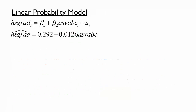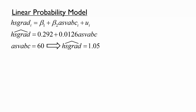Let's use the same model to predict the probability that an individual with an ASVAB score of 60 has a high school diploma. A score of 60 is relatively high — almost the 90th percentile of this sample. Plugging in ASVAB C equals 60, we predict HSgrad to be 1.05. If we apply the same interpretation literally, an individual with an ASVAB score of 60 has a 1.05 probability of having a high school diploma. Of course, probabilities cannot be greater than 1 — so how do we get this value? Simply put, a linear model does not guarantee that the predicted values are between 0 and 1.